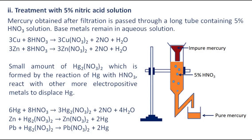Treatment with 5% nitric acid solution: Mercury obtained after filtration is passed through a long tube containing 5% nitric acid solution. Base metals remain in aqueous solution. A small amount of mercurous nitrate, formed by the reaction of mercury with nitric acid, reacts with other more electropositive metals to displace mercury.